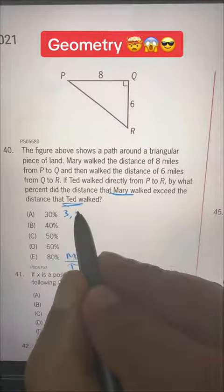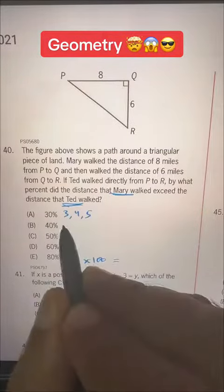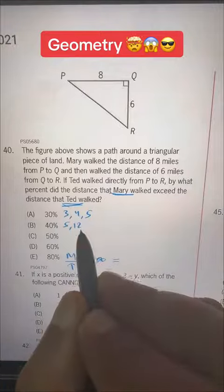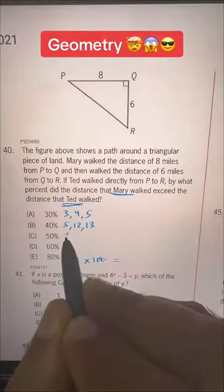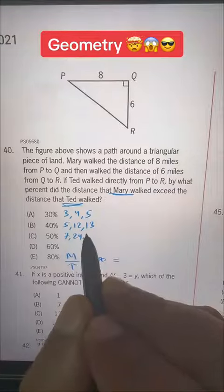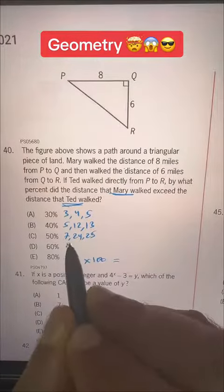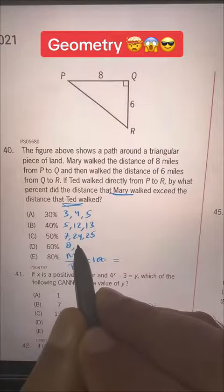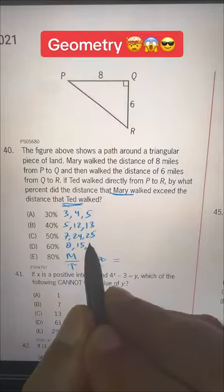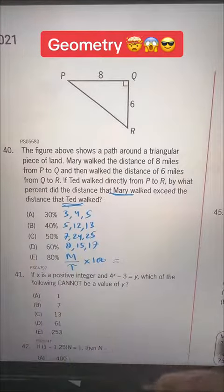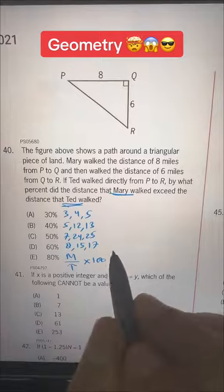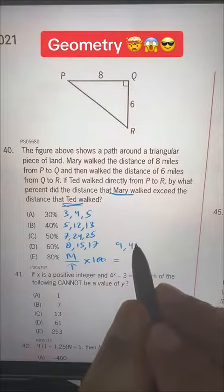The combinations are 3, 4, 5, then 5, 12, 13, then 7, 24, 25, then 8, 15, 17, and then there is 9, 40, 41.